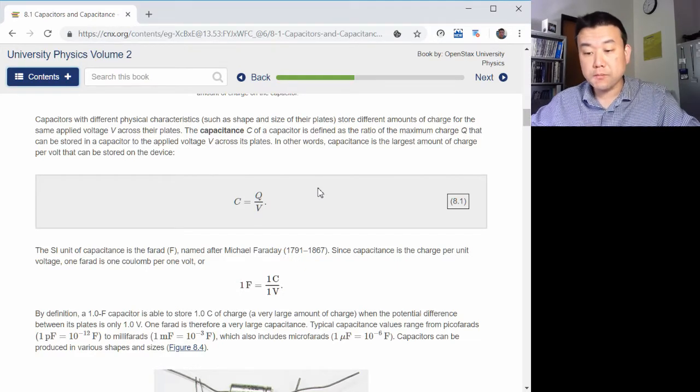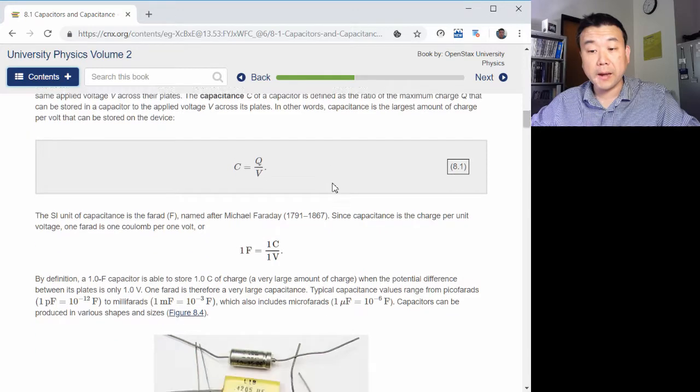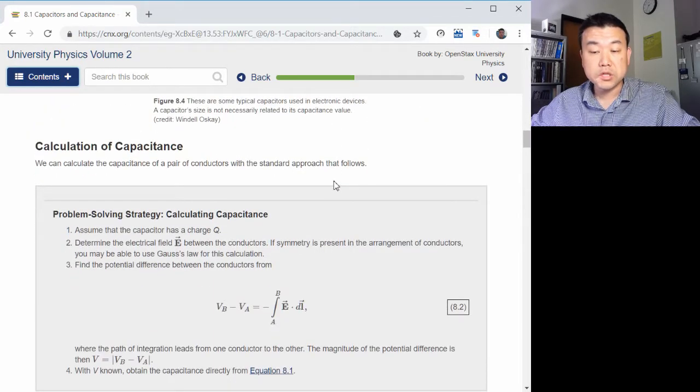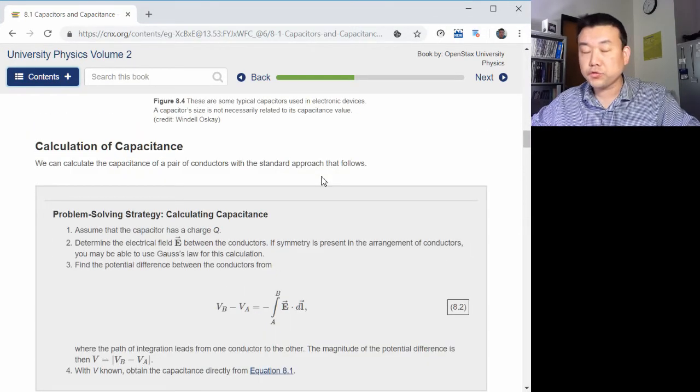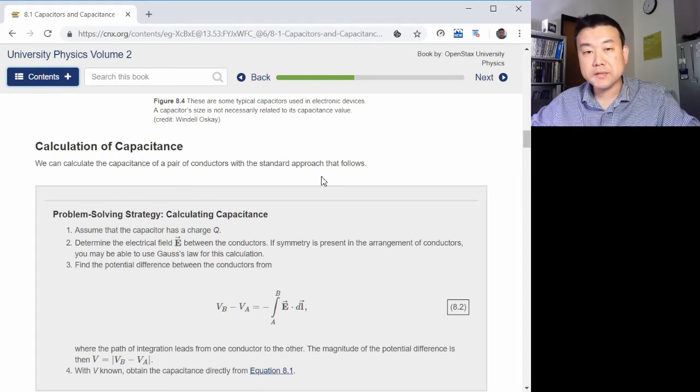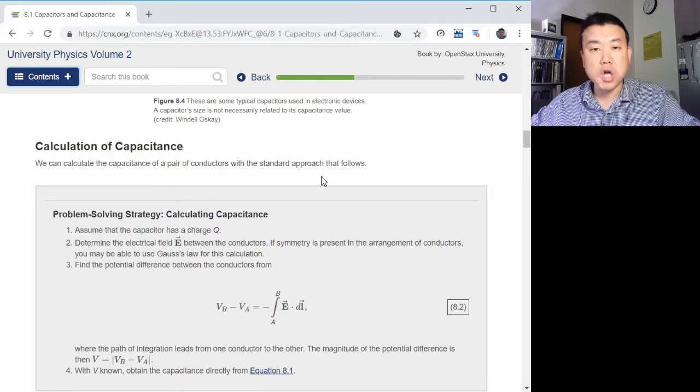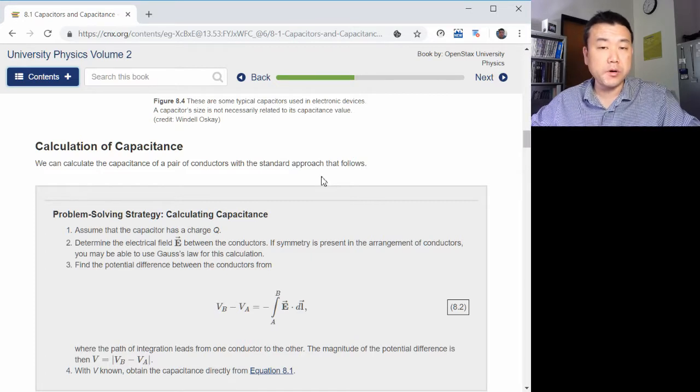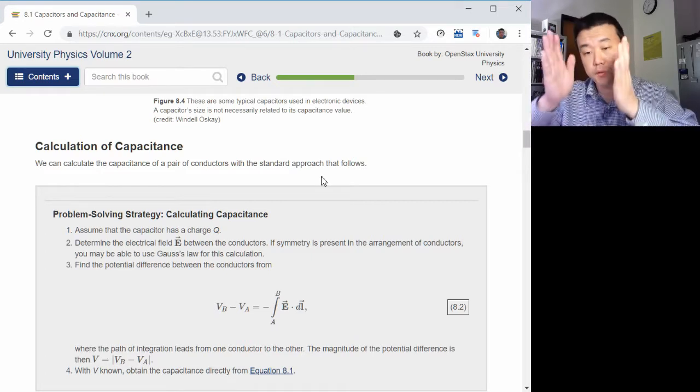Now with this definition of capacitance, what I want you to be able to do is calculate the capacitance in some geometries. So when you do this correctly, capacitance should only depend on the geometry and possibly properties of the dielectric material between the plates.